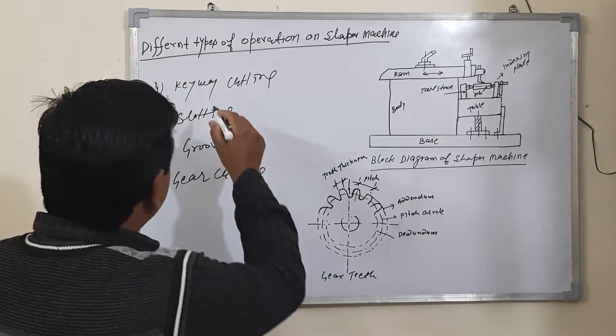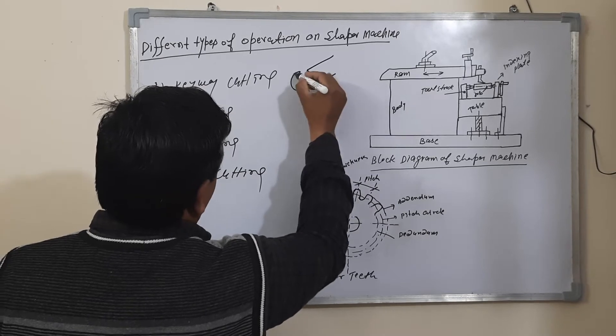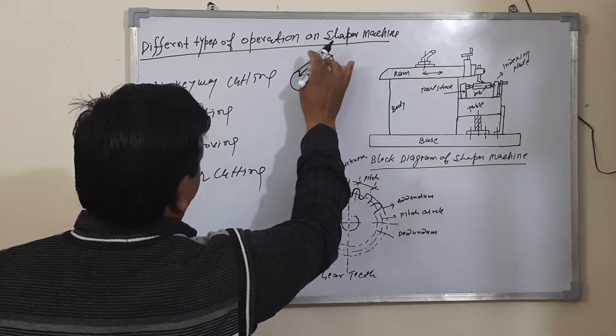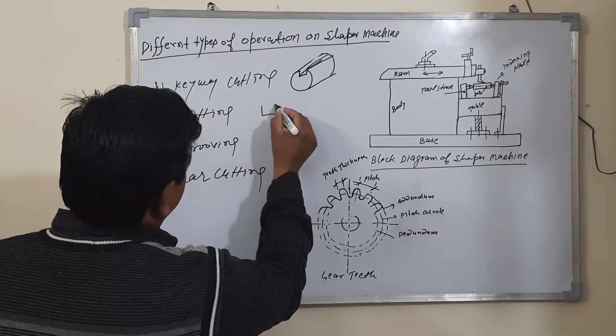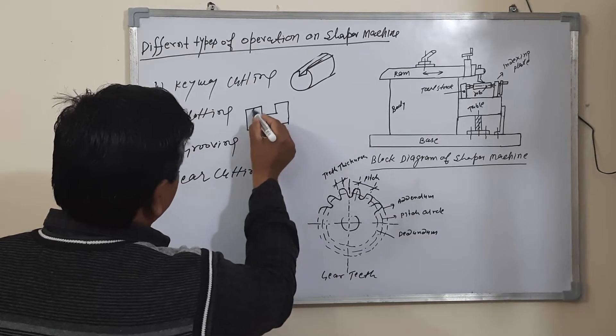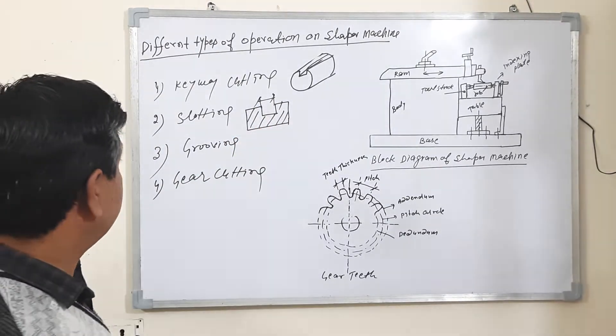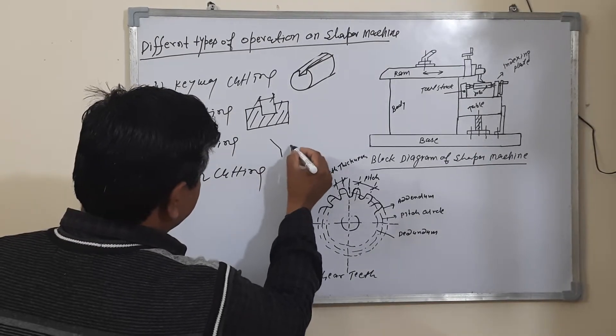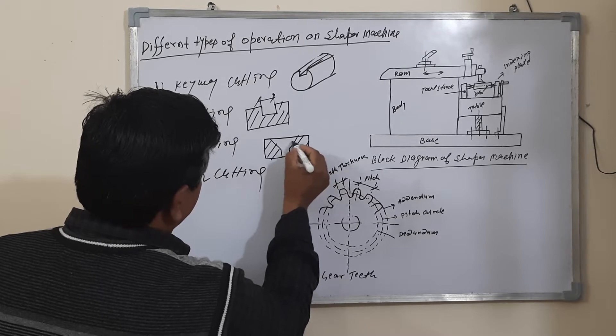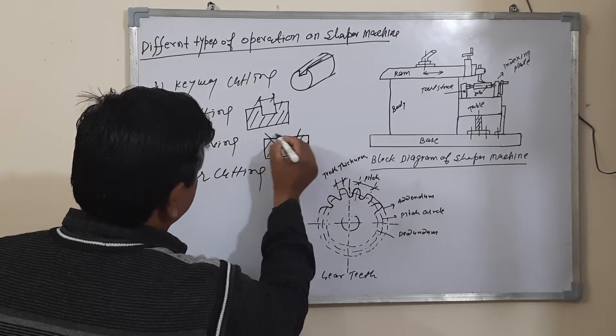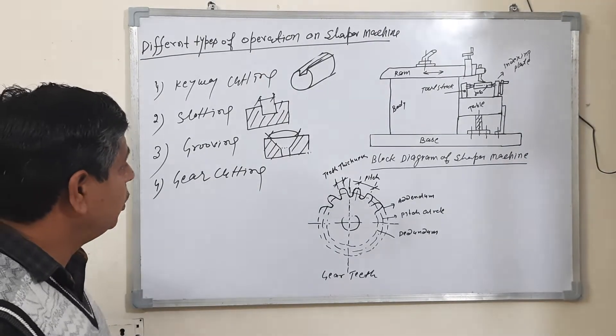Keyway cutting - how to cut the keyway, just like this. Slotting is cut in this way. Grooving is cut in this way. This is grooving, like this.